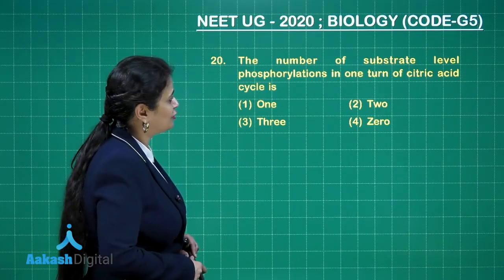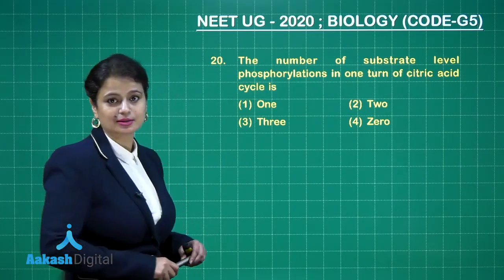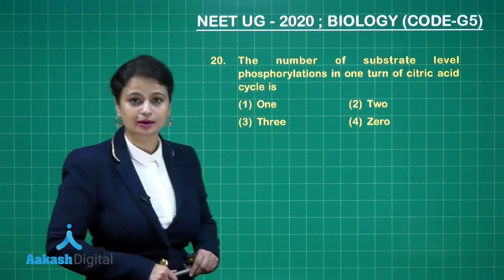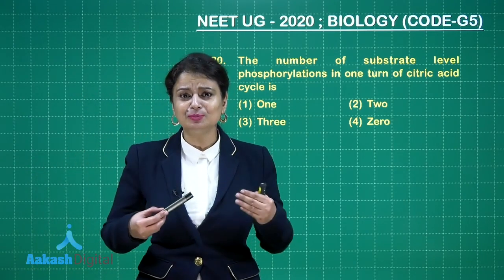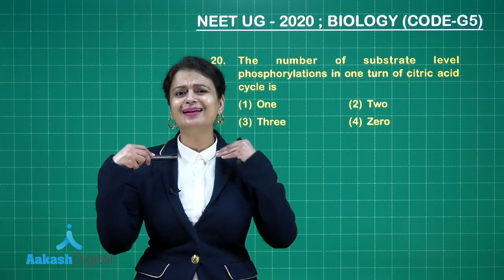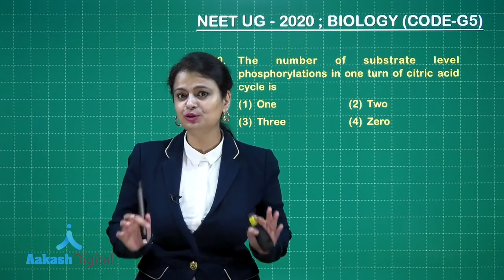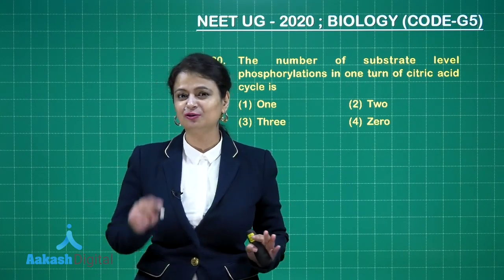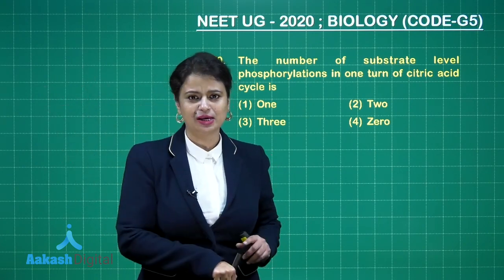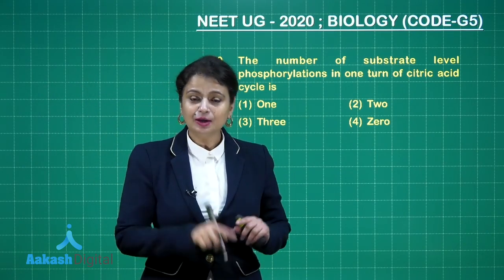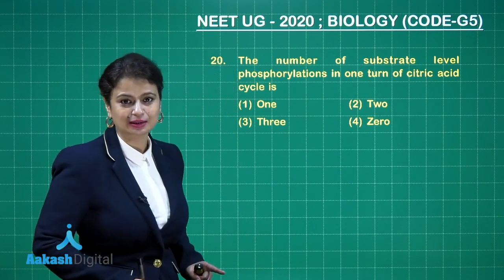The number of substrate-level phosphorylations in one turn of the citric acid cycle. When we talk about substrate-level phosphorylation, it means there is direct synthesis of ATP or GTP — there won't be involvement of F0F1 complex for synthesis of ATP. In the citric cycle, we have learned that there are ten steps.